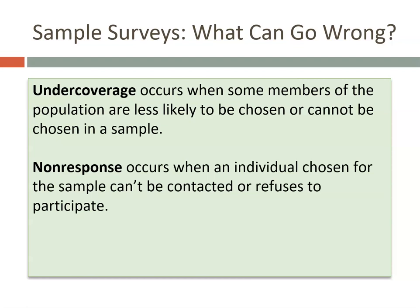Another way that sample surveys can go wrong is non-response. Non-response occurs when an individual chosen for the sample cannot be contacted or refuses to participate. For example, if you emailed a Google Form to a randomly selected group and they simply don't respond — that's non-response. That's on the individuals, not on the samplers.